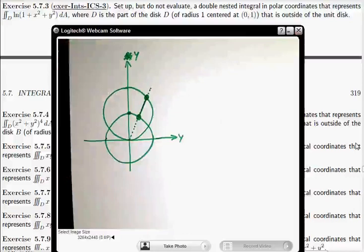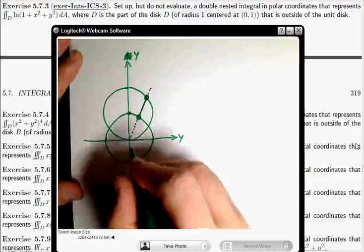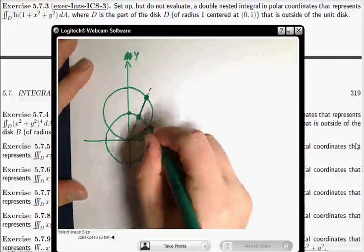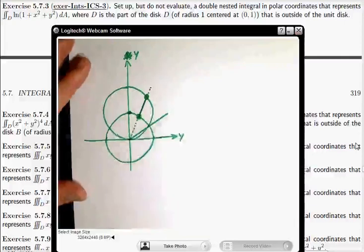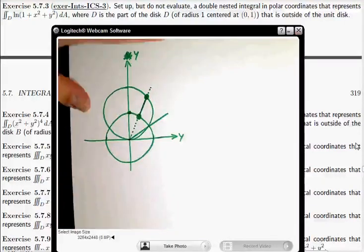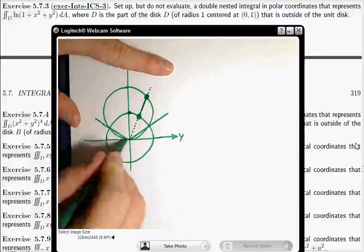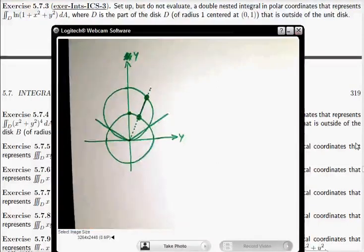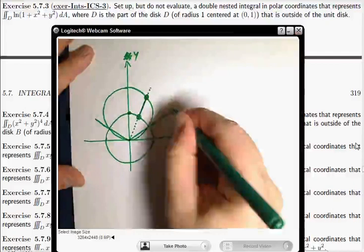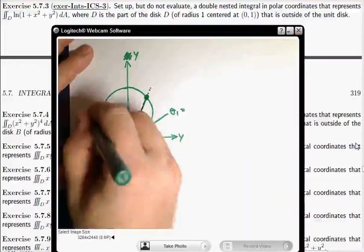Alright, so we want to know what's the smallest value of theta. I claim it's that line. And what's the largest value of theta, which I claim is defined by that line. So there's your theta 1 and here's your theta 2.